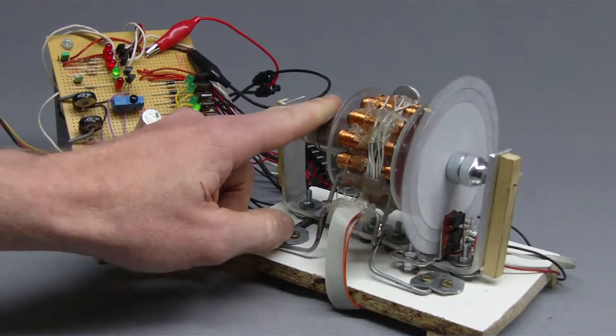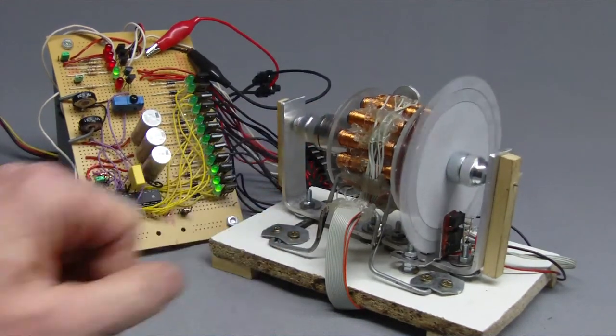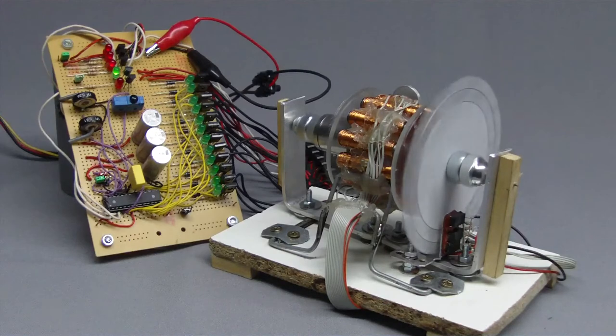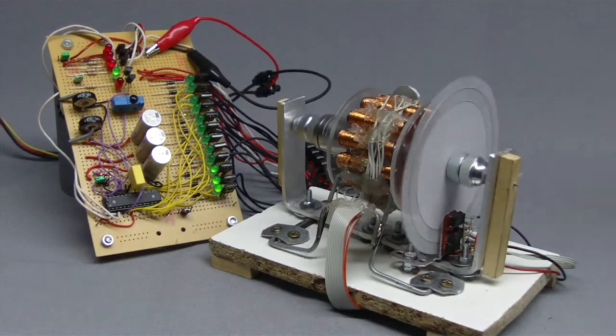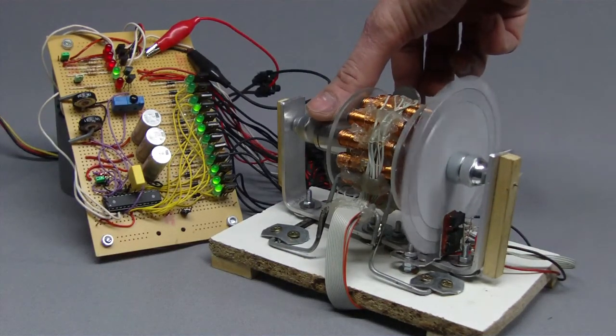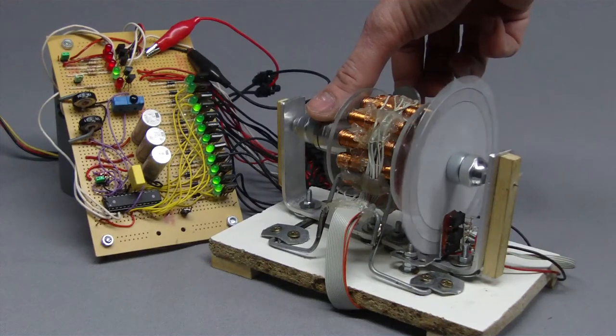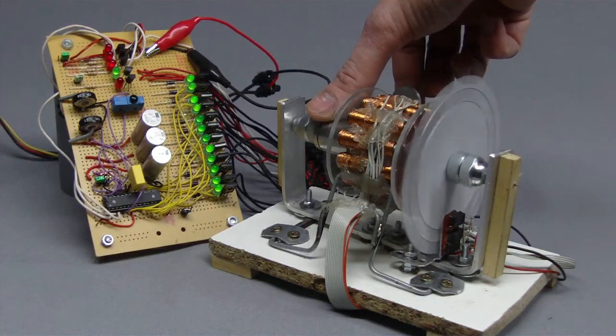If I slow down the motor, it is better to do this from the other side, the microcontroller increases the torque automatically to keep the constant rotation speed.